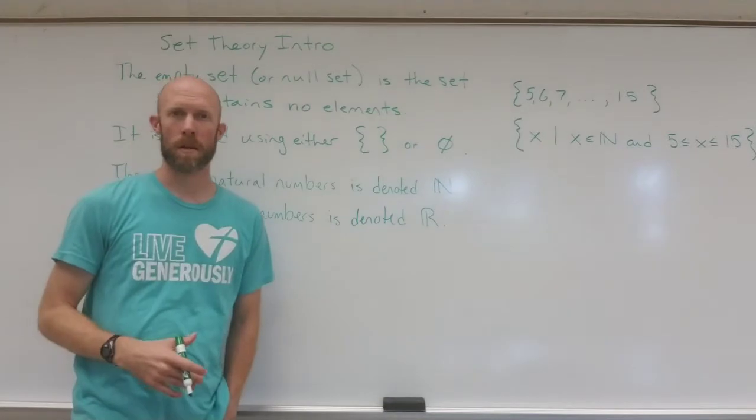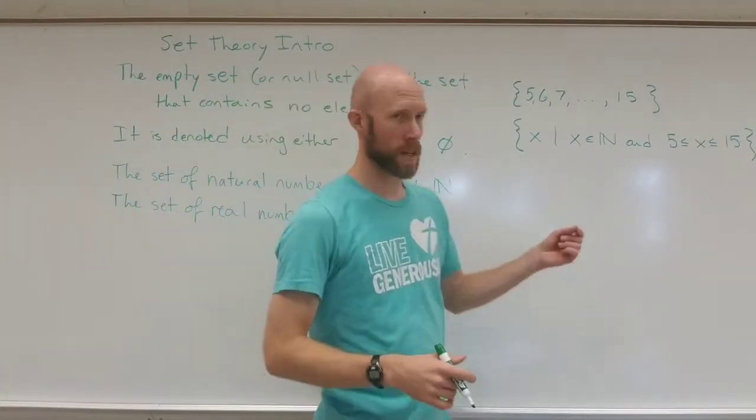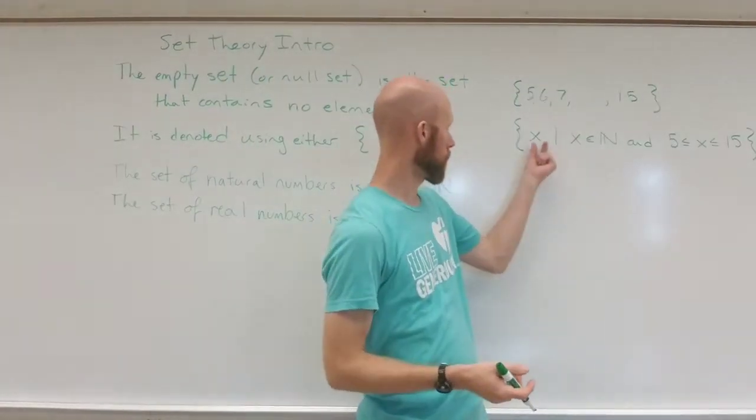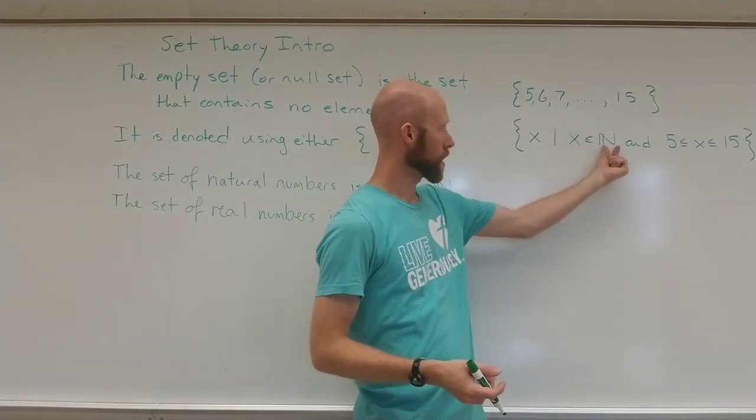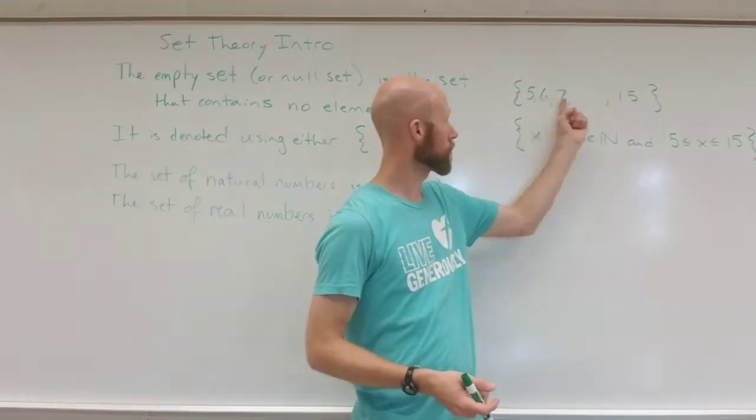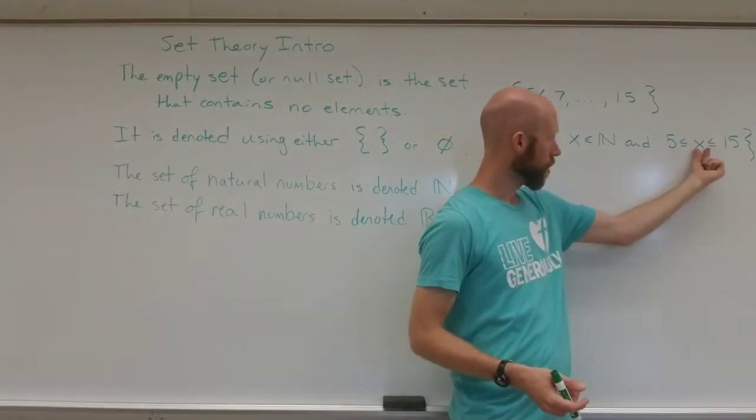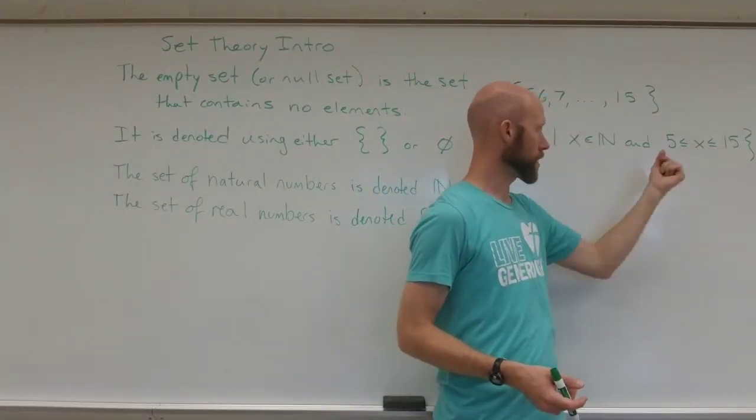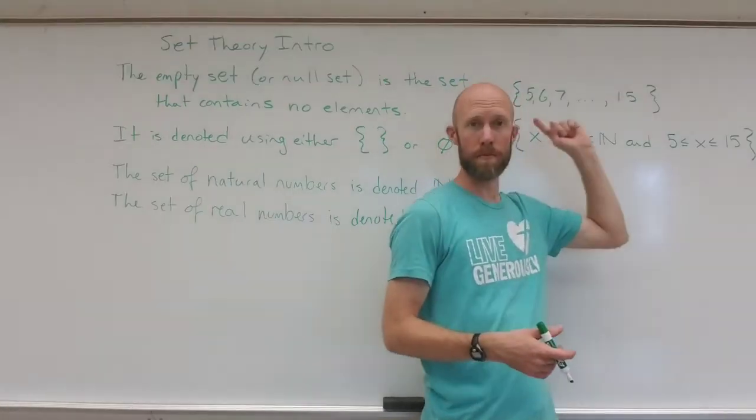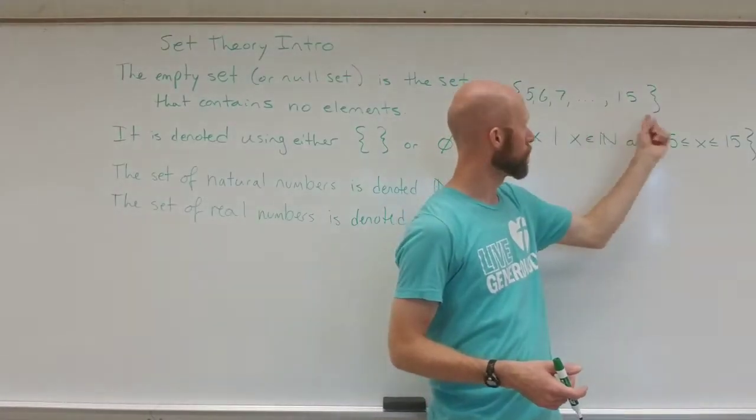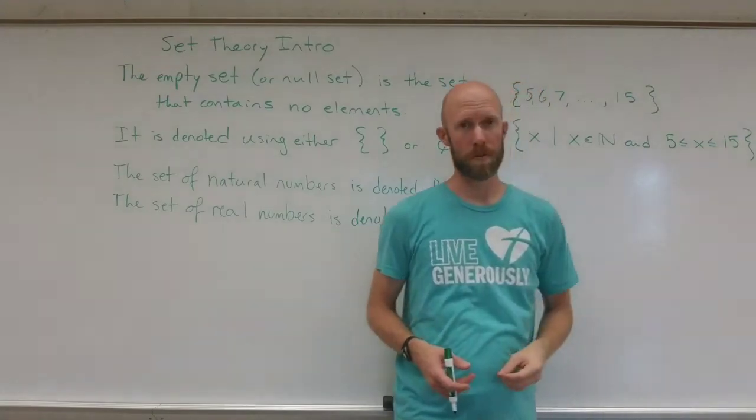This would be an appropriate set builder notation because it has all of the conditions right. All of the x values are in the natural numbers. All of these are in the natural numbers and they all fall between 5 and 15. In other words, 5 is less than or equal to every value in this set and every value in this set is less than or equal to 15.